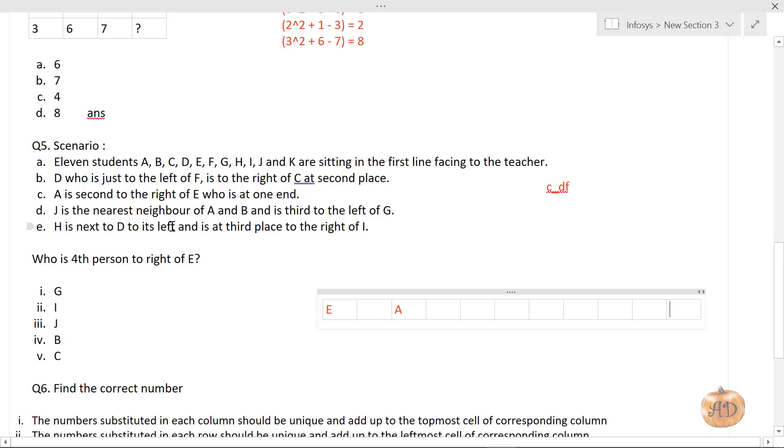Point D: J is the nearest neighbor of A and B and is third to the left of G. So one side of J is A, the other side is B. Since A is already here, J is here and B is here. And J is third to the left of G - first, second, third. So G is here, third to the right of J.